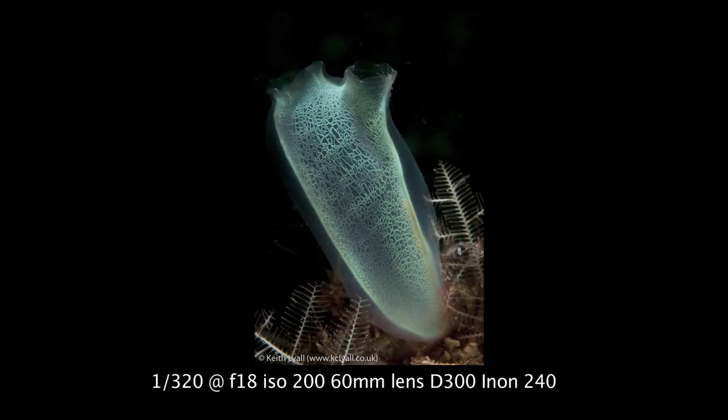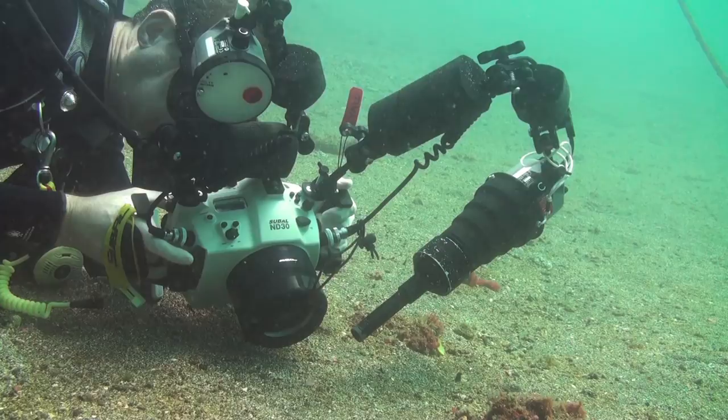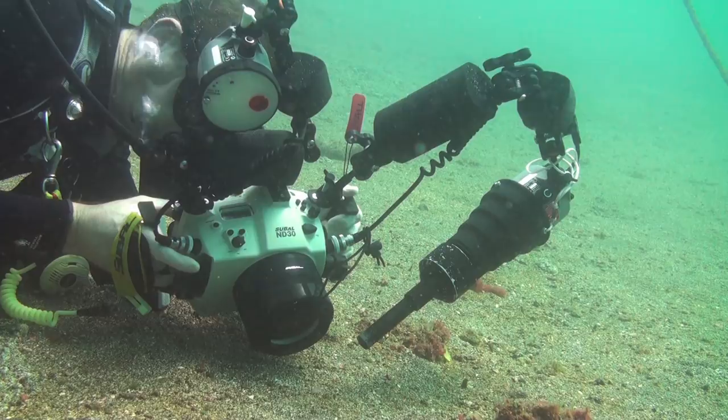The diameter of the opening determines the size of the subject you can shoot. Finer snoots, like the one Keith's using in this clip, are ideal for showing fine detail in subjects like nudibranch gills.